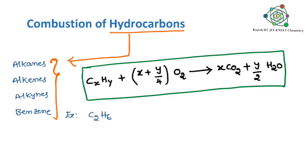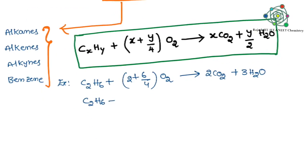Now I want to give you clarity with one example. I am taking here alkane, ethane. In ethane, x is equal to 2 and y is equal to 6. I am substituting those values in the above equation.